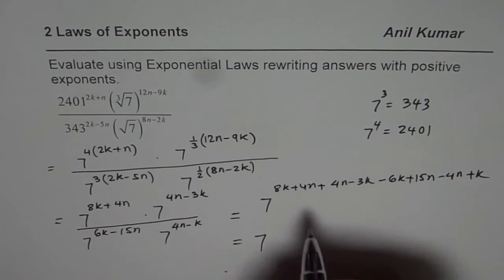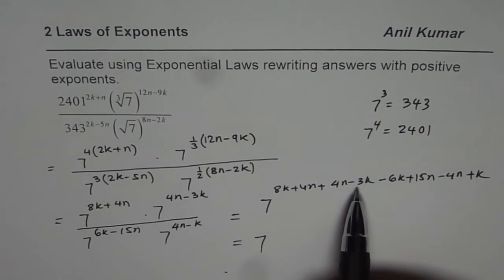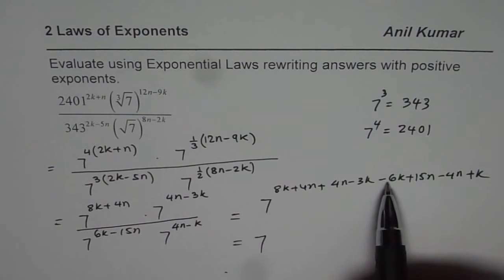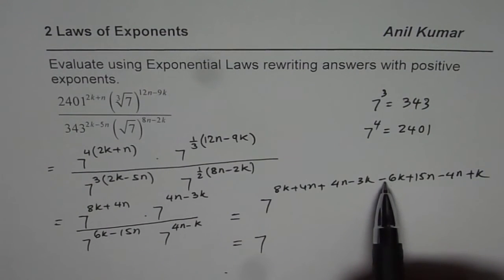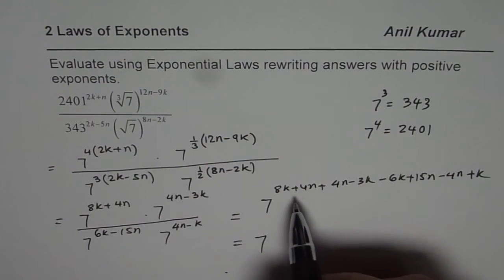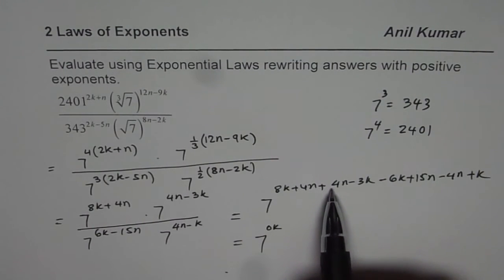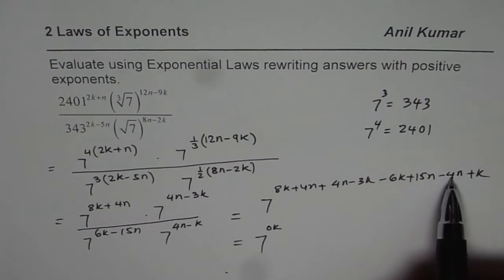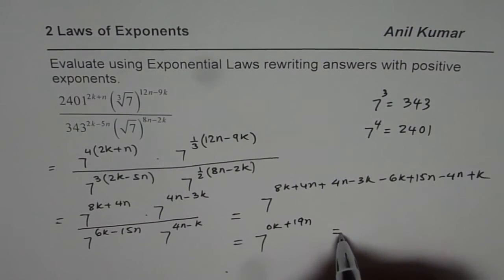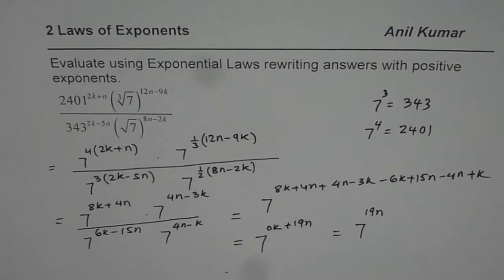And now, you can just combine k's and n's. So k, we have how many? 8 minus 3 is 5. 5 minus 6 will give you minus 1. Minus 1 plus 1 gives me 0k. So 0k, so no k's. Let me write 0k here for the time being. We will check. n: 4 plus 4 is 8. And then 4 taken away leaves it with 4. And then add 15. So it is 19. So we have 19n. So in a way, we get 7 to the power of 19n as our answer for this particular question, correct?